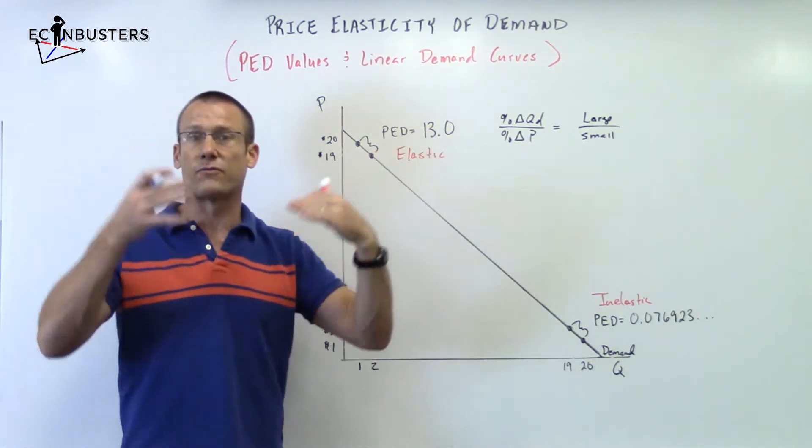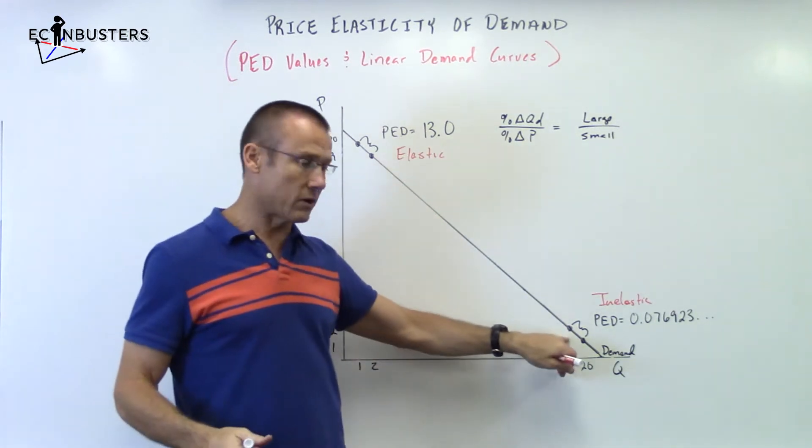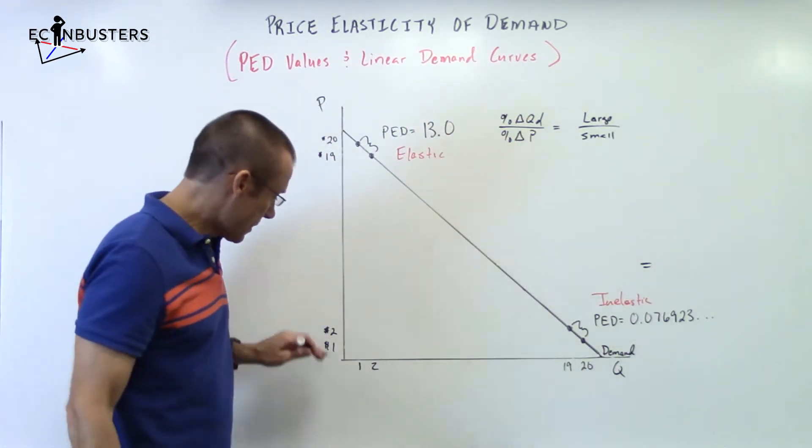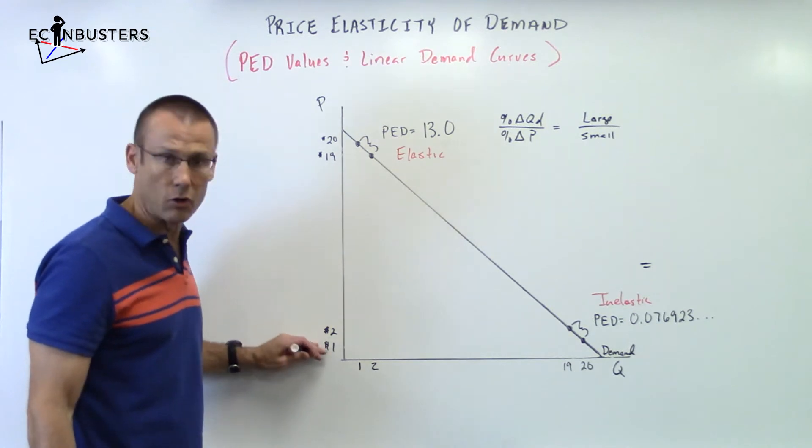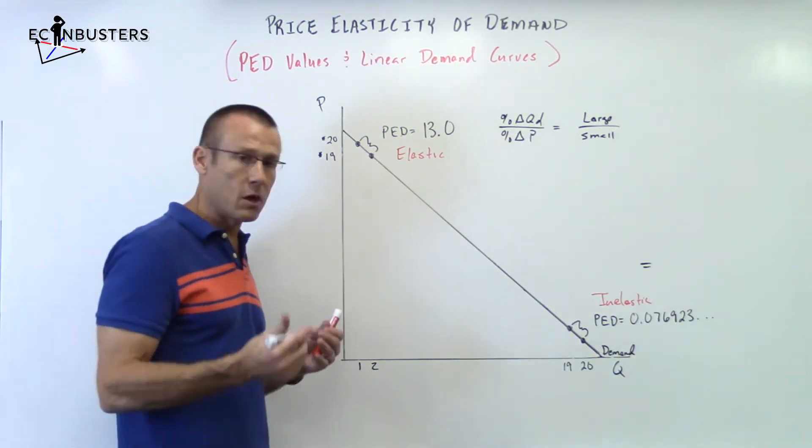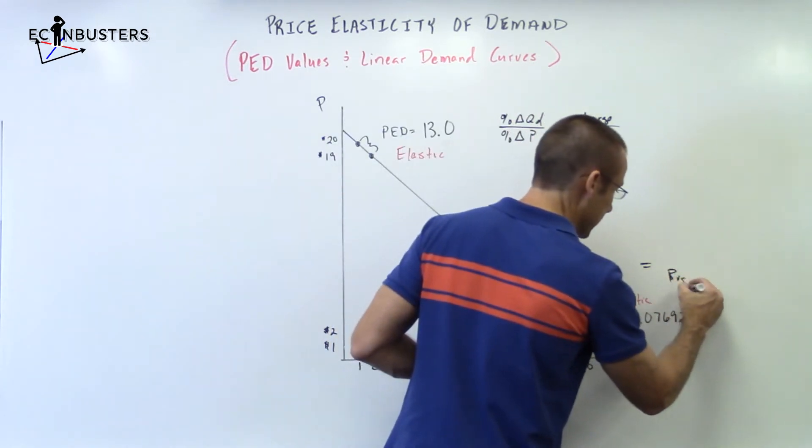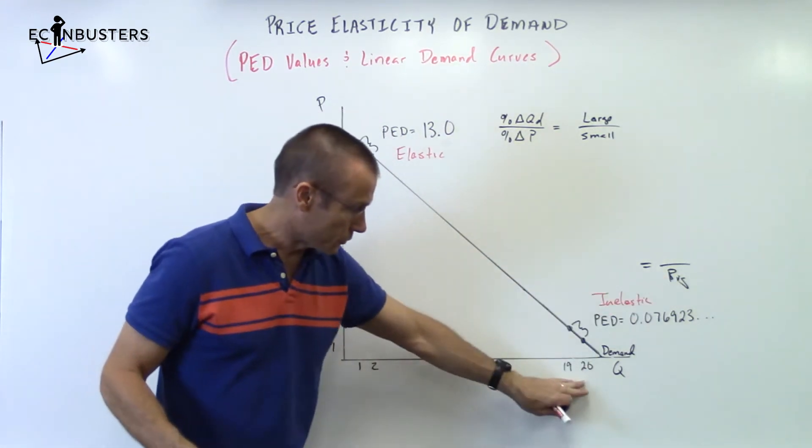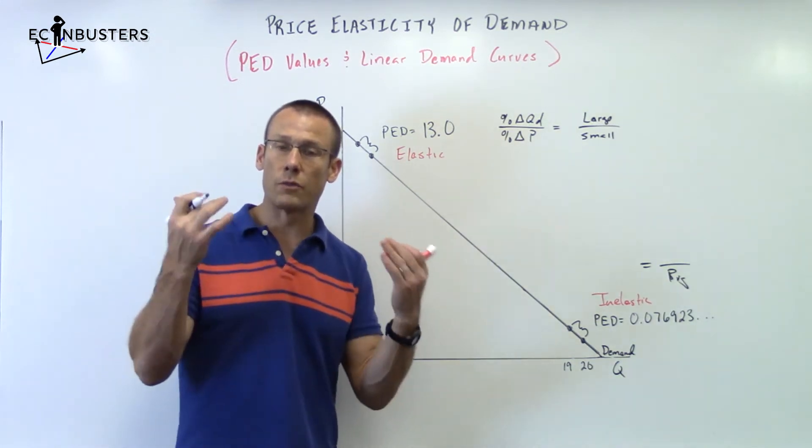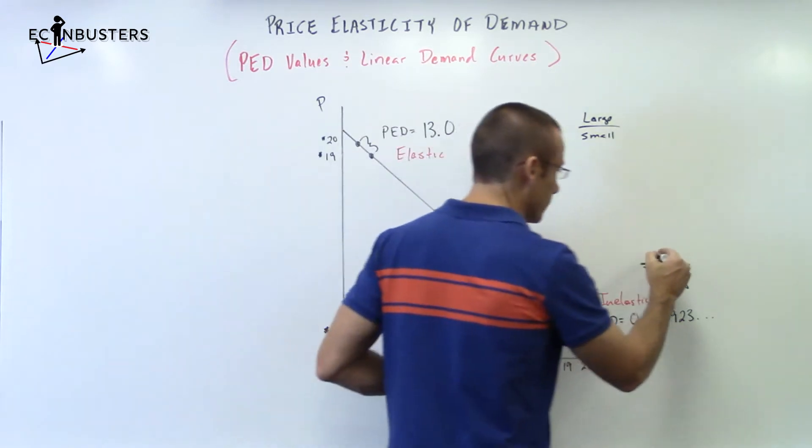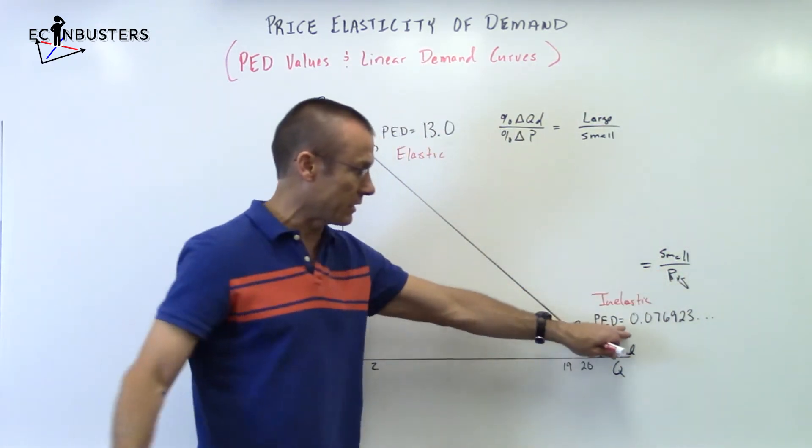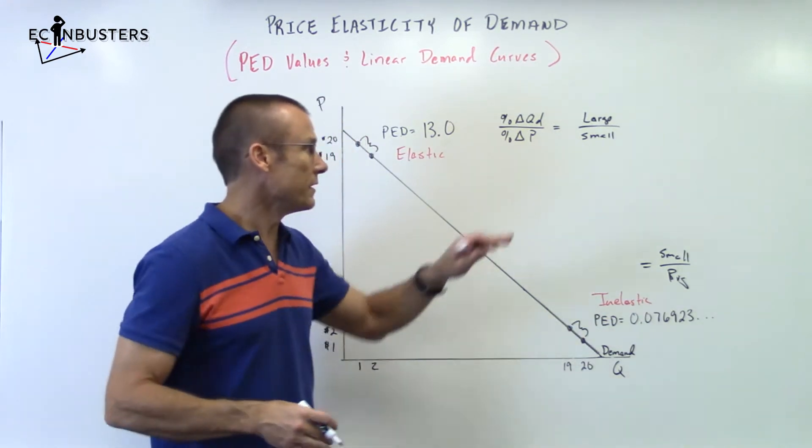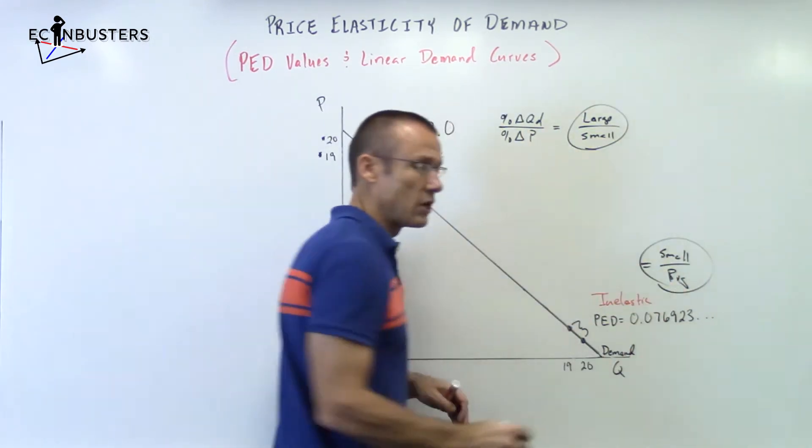We get something like this, a number far greater than one, which is elastic. Way down here at this point right there, let's take a look. Percent change in QD, percent change in price. Percent change in price - well price is now small. So we're looking at increment of one, a change of one, and the price is small. Well guess what, we're going to get a big value for the percent change or large. Now QD, quite large number. Look at an increment of one, the percent change in QD is going to be small. So small over big, small over big - that's what you get, a 0.076923 value. Quite inelastic.